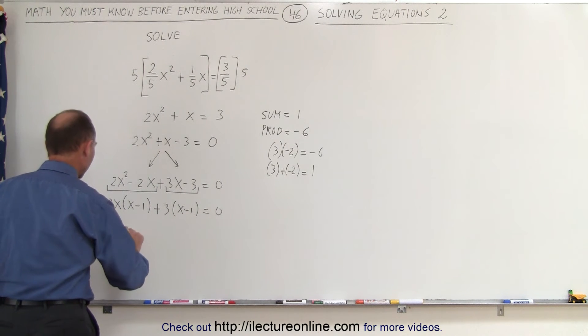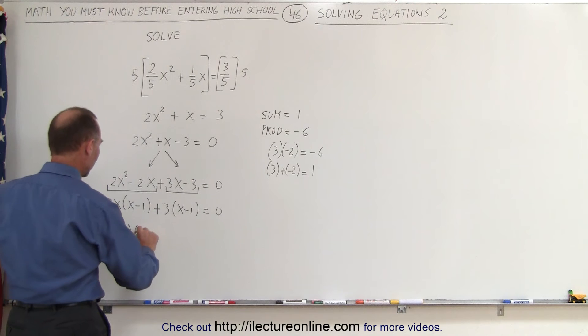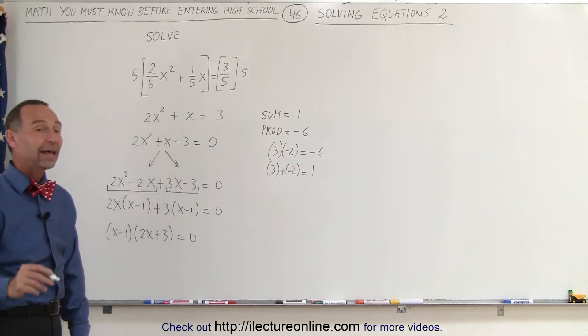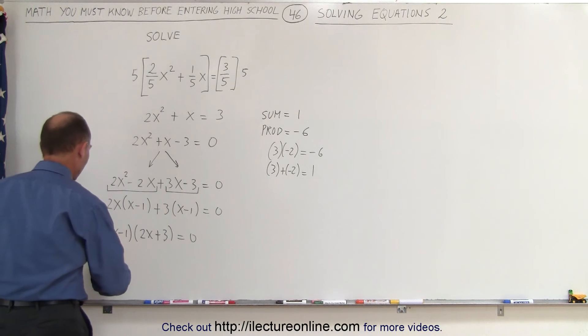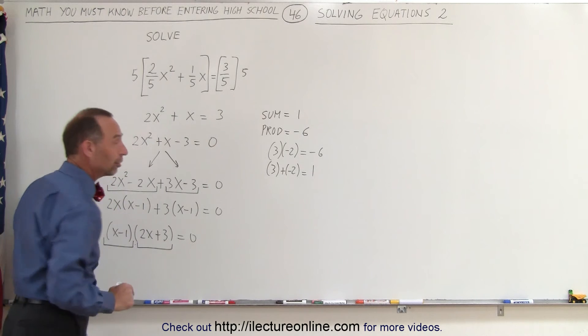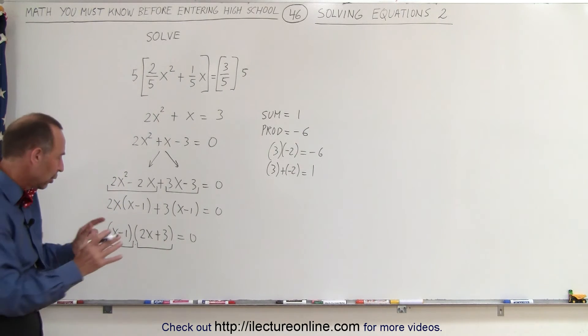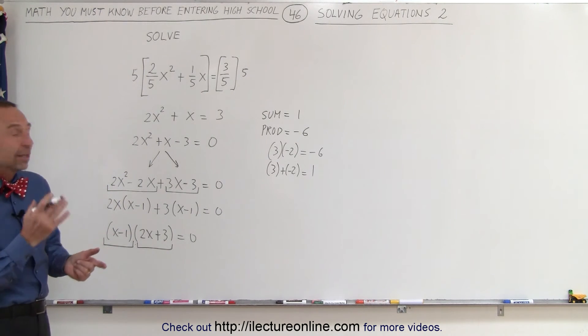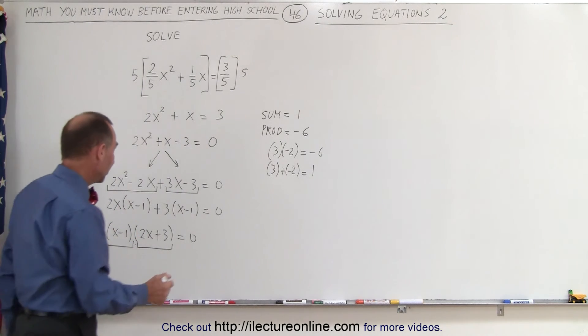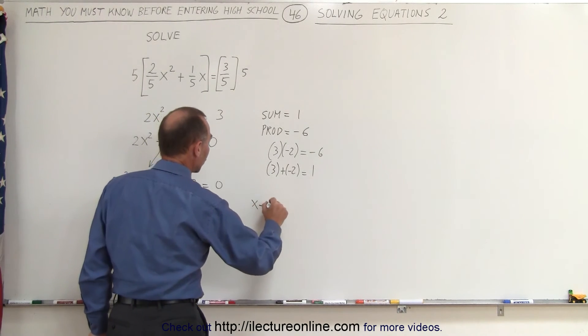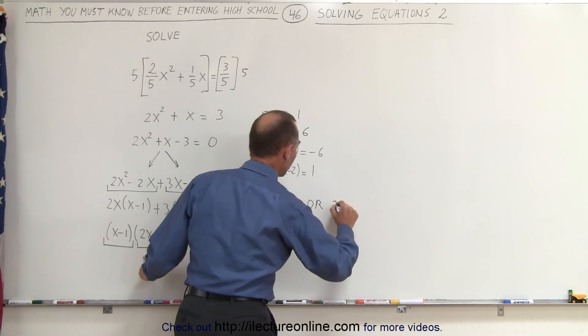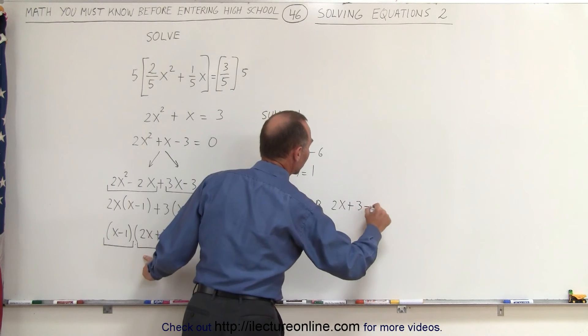So x minus 1 times what's left, 2x plus 3, equals 0. Now the last part is we realize that we have a binomial multiplied times a binomial, and we get 0. So whenever we multiply two things together and we get 0, that means either one is 0 or the other is 0, which means that either x minus 1 is equal to 0, or the quantity 2x plus 3 is equal to 0.